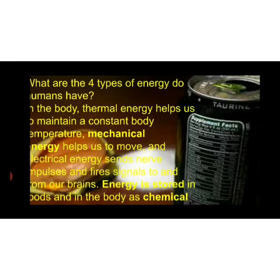The body has thermal energy, which helps us to maintain a constant body temperature. We also have mechanical energy, which helps us to move. We also have electrical energy, which helps us to send electrical signals to the nerves, to the brain, and from the brain to different body parts. And then we have stored energy inside the body in the form of chemicals. So these are the four types of energy present inside the human body: thermal energy, mechanical energy, electrical energy, and chemical energy.